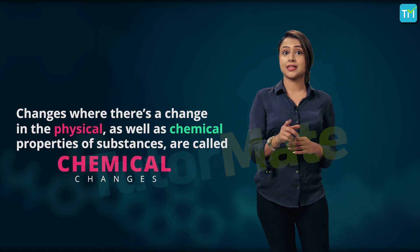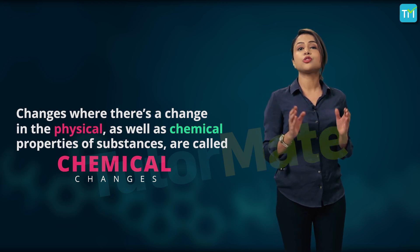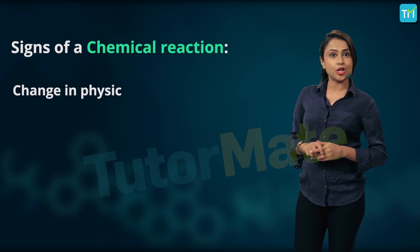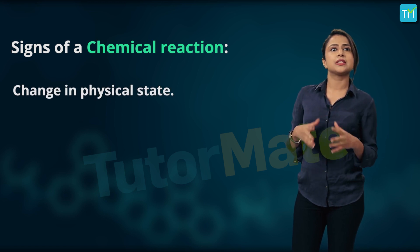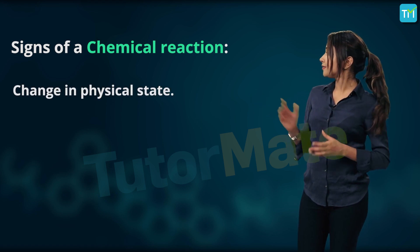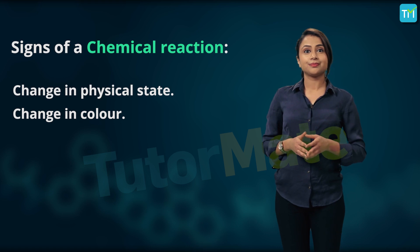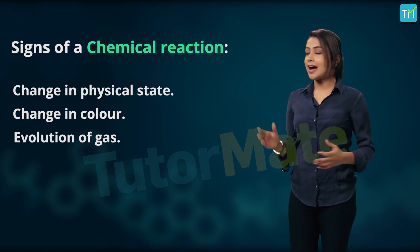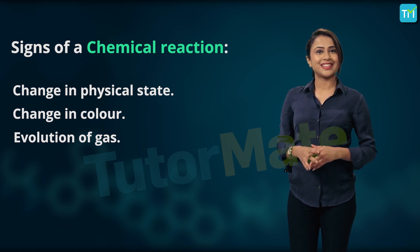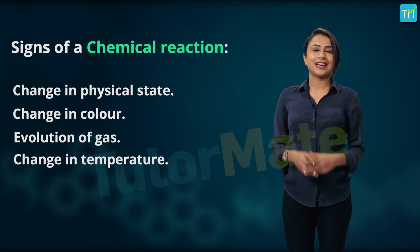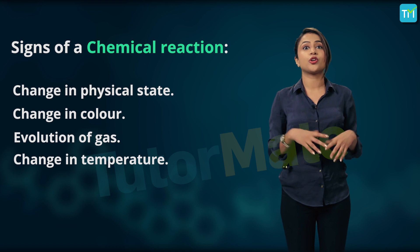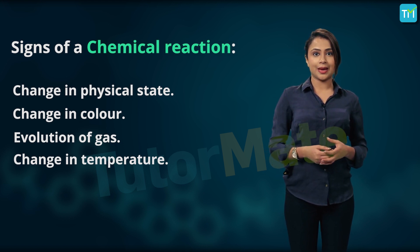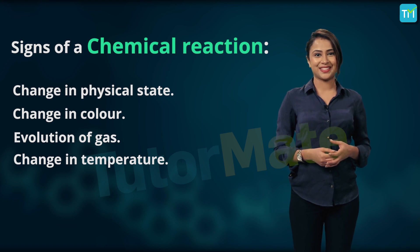Now there are four signs that prove the occurrence of a chemical reaction. First is a change in physical state. Second is a change in color. Third is the evolution of a gas. And fourth is a change in temperature. Now if any of these things, or a combination of them, is observed, we can conclude that a chemical reaction has taken place.